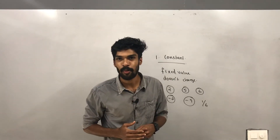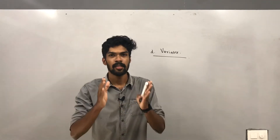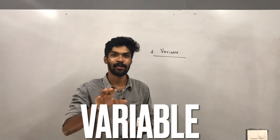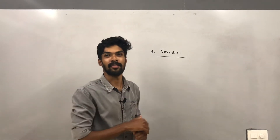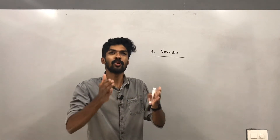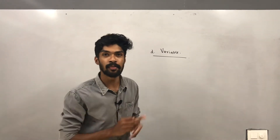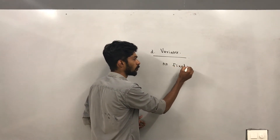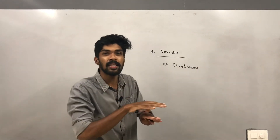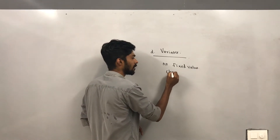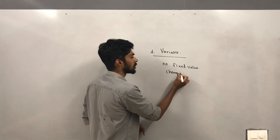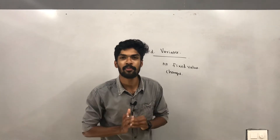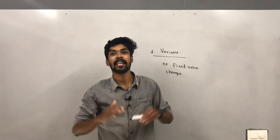The second thing we are going to study is variable. Variable is another important and familiar word. A variable is just the opposite of constant — a constant has a fixed value, but a variable has no fixed value. A constant does not change, but a variable changes. So a variable does not have a fixed value and it changes accordingly.